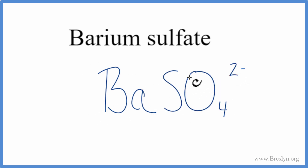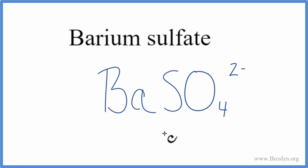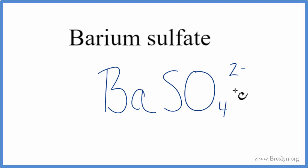Barium's a metal, and the sulfate — that's a group of nonmetals. So a metal and nonmetals, that's ionic. And when we have an ionic compound, we need to take into account the charges on the barium, and we know the sulfate has a 2- charge.